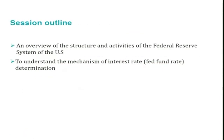Let us now start with this particular session. We will make an overview of the structure and activities of the Federal Reserve System and then move into the mechanism of interest rate determination. Since we are talking about the central bank — the monetary authority and apex bank in the country — which is vested with responsibility to ensure monetary stability, financial stability, and economic stability, it is better to know how the US central banking system is structured and what its activities are.